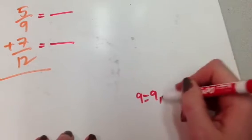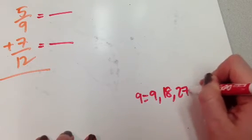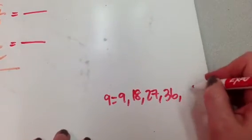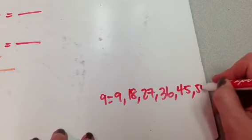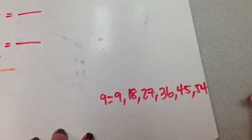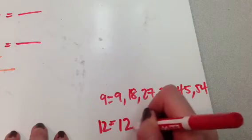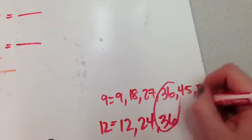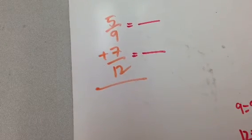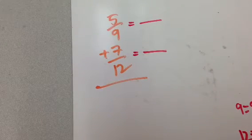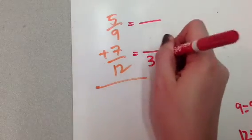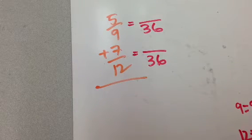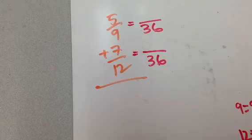So, factors of nine are nine, eighteen, twenty-seven, thirty-six. Nine times four is thirty-six. Nine times five is forty-five. Fifty-four. How about twelve? Twelve times one is twelve. Twelve times two is twenty-four. Twelve times three is thirty-six. Oh, look at that. Thirty-six. Excellent. We can use thirty-six. Nine and twelve, my common denominator is thirty-six.